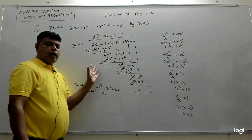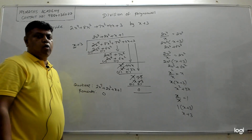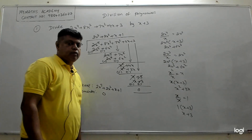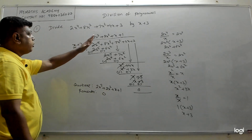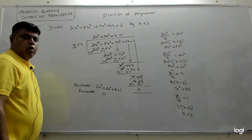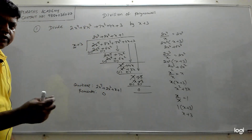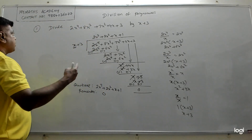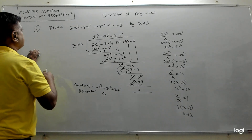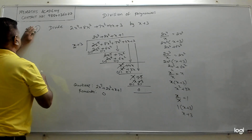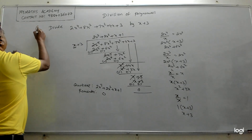This is how we divide two polynomials. It is also called long division for polynomials. Now I will do another sum — the second problem.